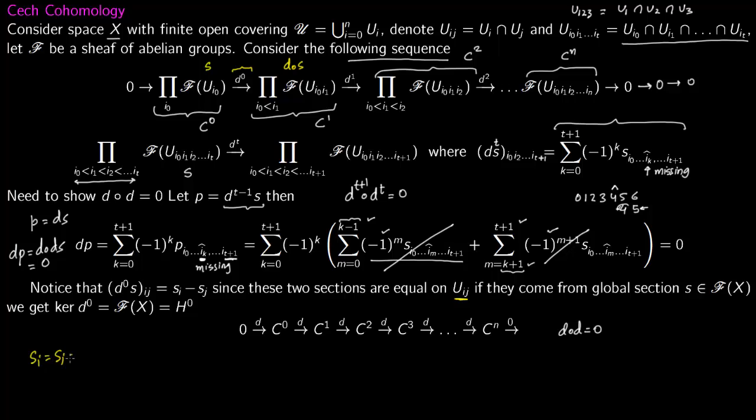These two sections are equal on the intersection. So s_i equals s_j on U_i intersection U_j if both s_i and s_j come from the same element s, from the global section. So if they come from the global section, the kernel is the global section. Kernel means when s_i equals s_j, then you can glue them together to get a global section.